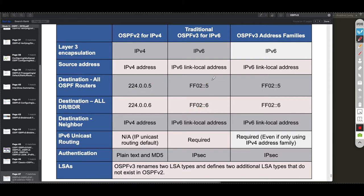The neighborship in OSPF version 3 is actually formed on the IPv6 link-local address — the FE80 address — which is used for neighbor relationships and sending information between routers sharing the same physical medium. The OSPF adjacency uses the IPv6 link-local address to create the OSPF version 3 neighborship, rather than the hard-coded IPv4 address on the interface, and we'll see that in the configurations.